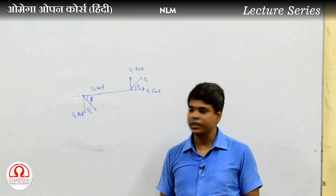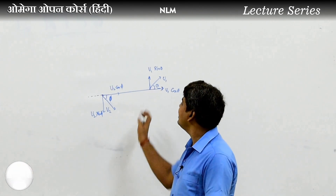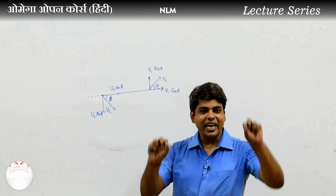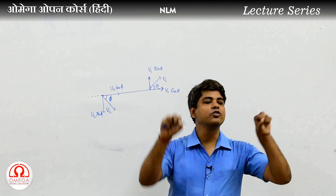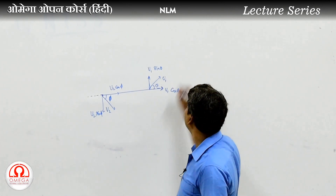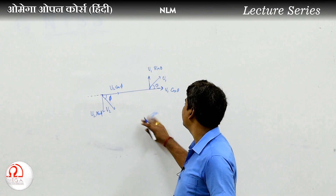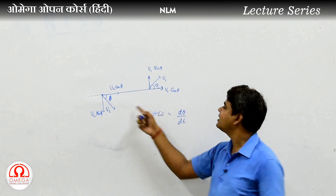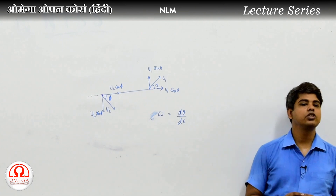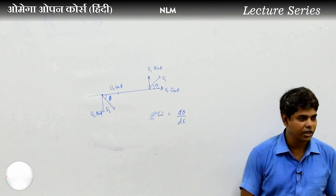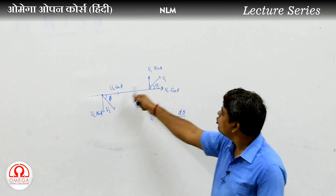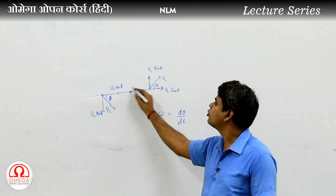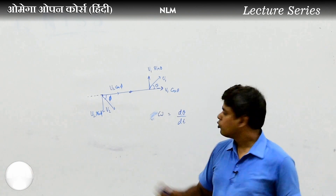The other component is the tangential component. The rate of change of angle is what we call omega, which is dθ/dt — the rate at which the angle changes, known as angular speed. The tangential component of relative velocity divided by the distance gives us this angular speed.